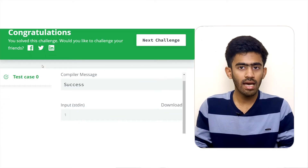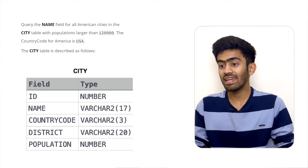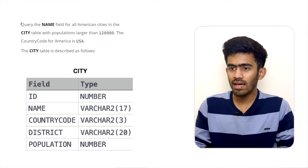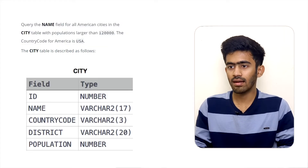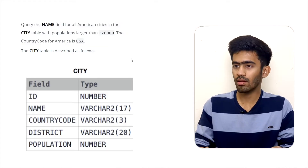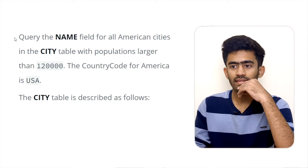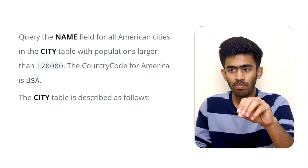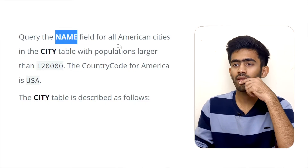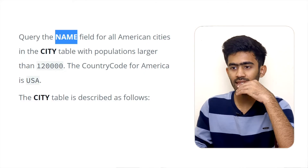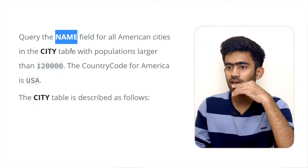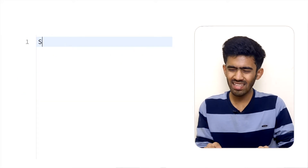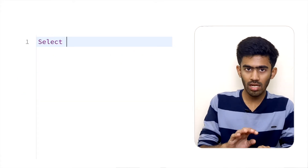This is the answer. Now the next challenge: from the same table, we have to query only the name field — selecting the name column for all American cities with population greater than 120,000.